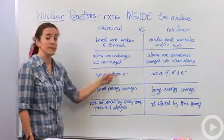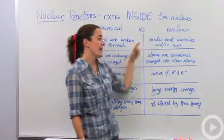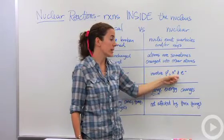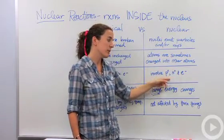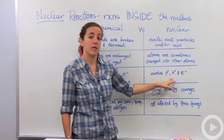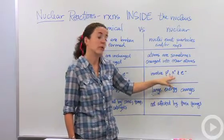In chemical reactions, they involve valence electrons. We know that. In nuclear reactions, they involve protons, neutrons, and electrons. Protons and neutrons are inside the nucleus, so these are the guys that are actually going to affect or make the chemical reaction or the nuclear reaction occur.